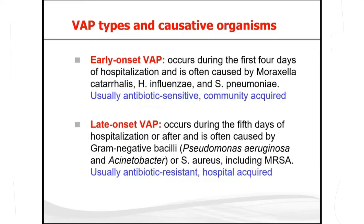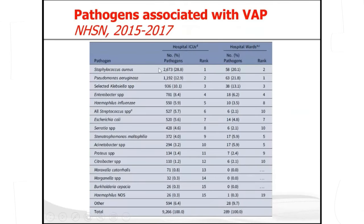Pneumonia can be categorized into early VAP and late VAP. Early VAP occurs within the first four days of hospitalization and is usually caused by sensitive community-acquired organisms like Haemophilus influenzae and Streptococcus pneumoniae, making it easier to treat. Late-onset VAP begins from the fifth day of hospitalization and is usually caused by resistant gram-negative bacteria like Pseudomonas and Acinetobacter, making it difficult to treat. Overall, VAP tends to be caused more by gram-negative organisms than gram-positive.